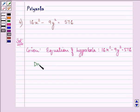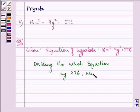Dividing the whole equation by 576, we have x²/36 - y²/64 = 1.